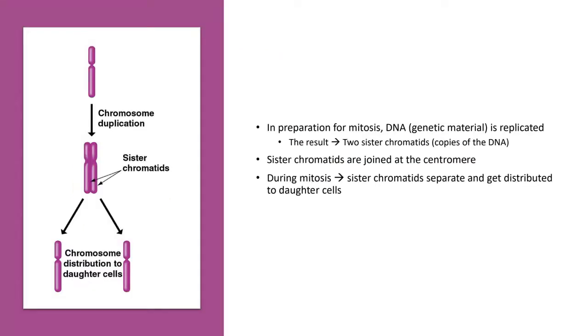This is almost a repetition of what I talked about before when going through the cell cycle and the S phase. In preparation for mitosis, DNA — your genetic material — is replicated. The result of this replication is two sister chromatids, two copies of the DNA. This replication happens in the S phase of interphase.